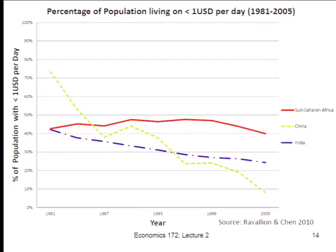Chinese dollar-a-day poverty in the 1980s was probably somewhere between 40 and 70%, but by 2005 it's less than 10%. The trend in India isn't quite as steep but it's definitely the same direction: from 40-something percent down to 20-something percent, and it has continued to fall. Sub-Saharan Africa doesn't do nearly as well. In the 1980s and 1990s, dollar-a-day poverty was actually rising — two terrible decades in terms of growth, civil war, and the HIV-AIDS epidemic. But at the very tail end after 2000, you start seeing a pretty steep decline in extreme poverty in Sub-Saharan Africa, and that has continued. They're finally joining a trend that China and India started a few decades earlier.